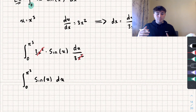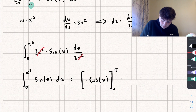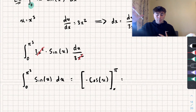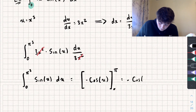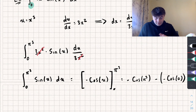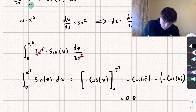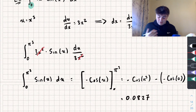When we integrate sine, that goes to negative cos. So we have negative cos of u between the limits of 0 and π cubed. Substituting in the upper limit and subtracting the lower limit gives us negative cos(π³) minus negative cos(0). Since cos(0) = 1, that becomes negative cos(π³) plus 1. Using a calculator, we get an answer of approximately 0.0827 to three significant figures.